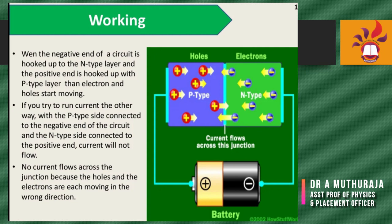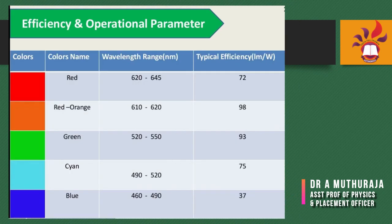This energy is emitted in the form of a photon, which causes light. The color of the light is determined by the energy level of the photon. Red and orange have wavelengths of 610–620 nm, green has efficiency around 520–550 nm, cyan around 490–520 nm, and blue around 464–490 nm. All these colors of LEDs are commercially available.